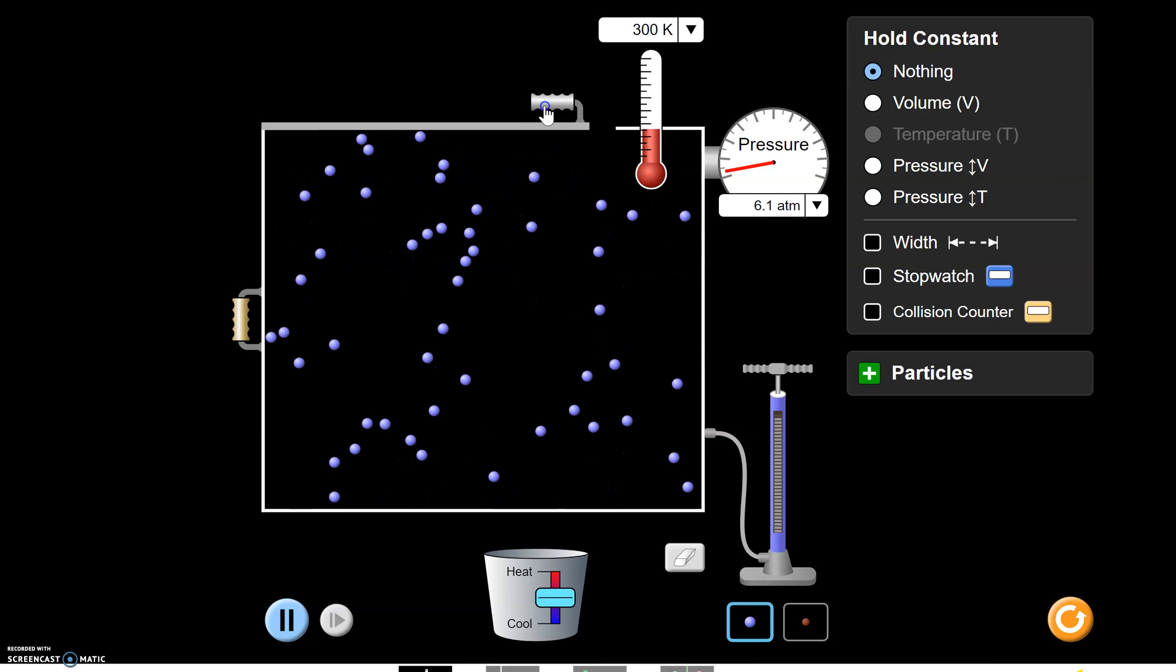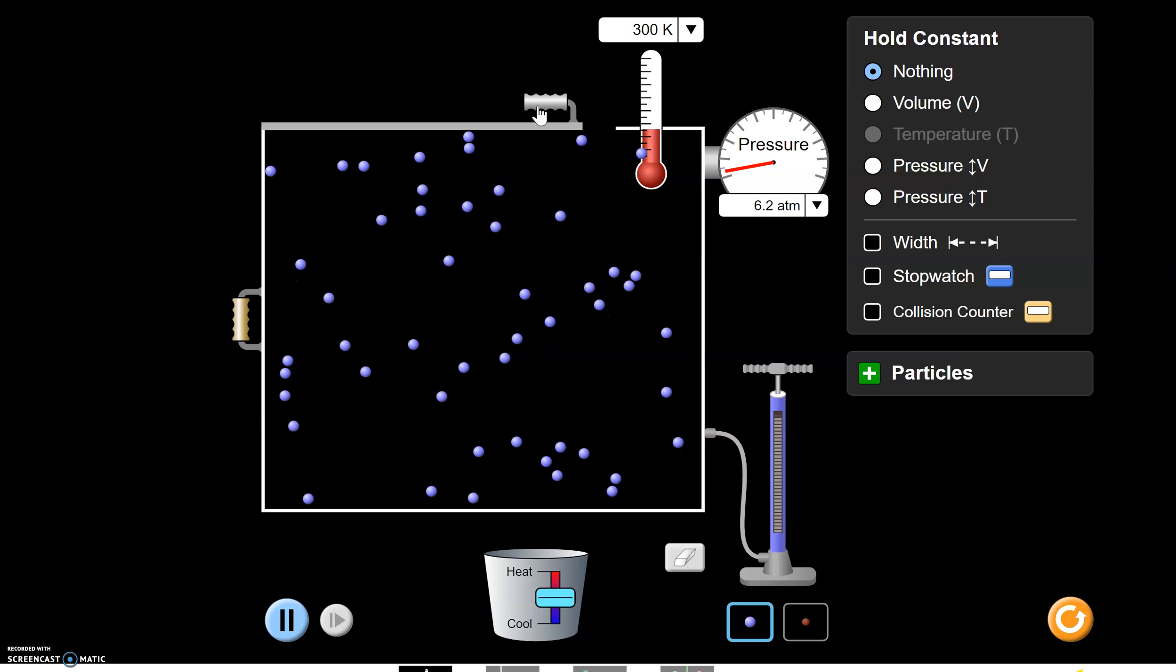And if we open up a small hole here, we know that every once in a while, one of them is going to make its escape. And of course, boom, there goes one right there. And it has a lot to do with the temperature, but we'll keep that constant, and it also has to do with their size.